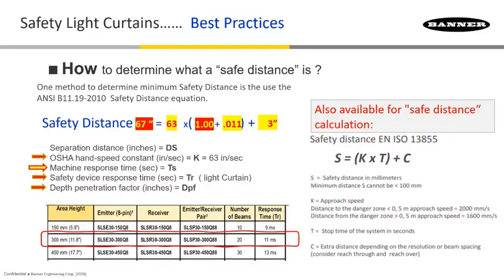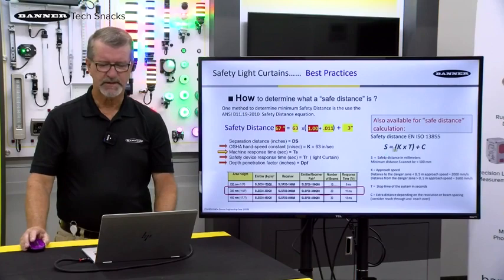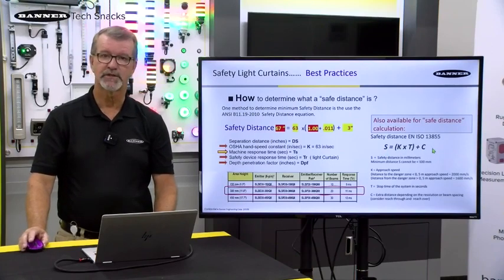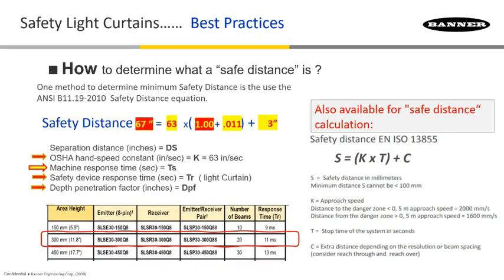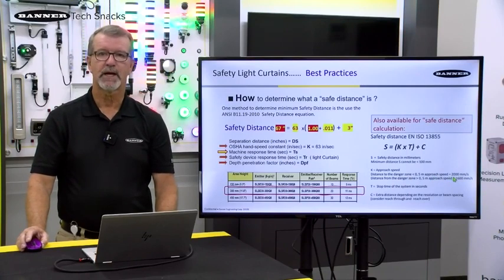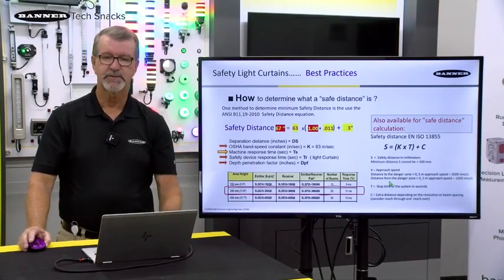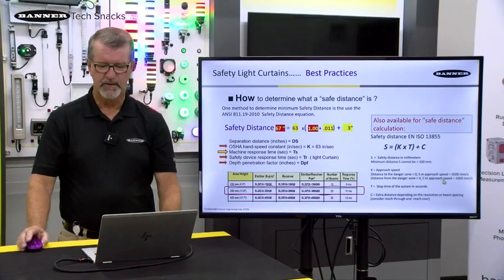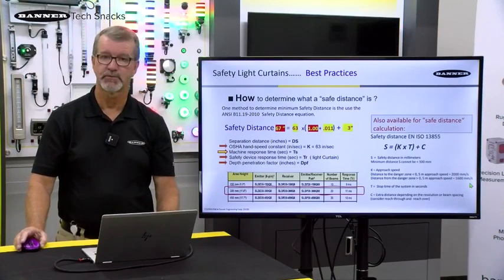There are other equations you can use for safety distance. In Europe, for example, the EN ISO 13855 uses this formula here, where the safety distance is equivalent to these components. One change you'll notice is the approach speed: instead of 63 inches per second, if the distance to the danger zone is less than 0.5 meters, the approach speed is 2,000 millimeters per second. On the other hand, if the distance to the danger zone is greater than 0.5 meters, the approach speed used is 1,600 millimeters per second, which is equivalent to 63 inches per second.